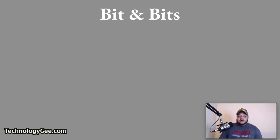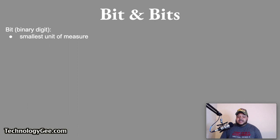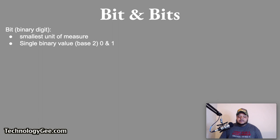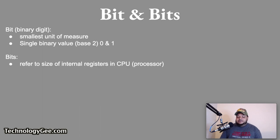A bit is short for binary digit and it is the smallest unit of measure used to quantify computer data. It contains a single binary value of base 2 — that of a 0 or a 1. Bits is the plural form of bit and refers to the size of the internal registry in a CPU processor. A nibble is equal to 4 bits.